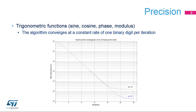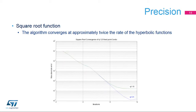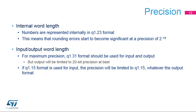The precision of the result is dependent on the number of Cordic iterations. The algorithm converges at a constant rate of one binary digit per iteration for trigonometric functions. For hyperbolic functions — hyperbolic sine, hyperbolic cosine, and natural logarithm — the convergence rate is less constant due to the peculiarities of the Cordic algorithm. The square root function converges at roughly twice the speed of the hyperbolic functions. The format of arguments and results is independently programmed in the fields arg size and res size of the Cordic CSR register, either Q1.15 or Q1.31. Internally, the Cordic accelerator implements the Q1.23 format, meaning rounding errors start to become significant at a precision of 2 raised to the negative 19.